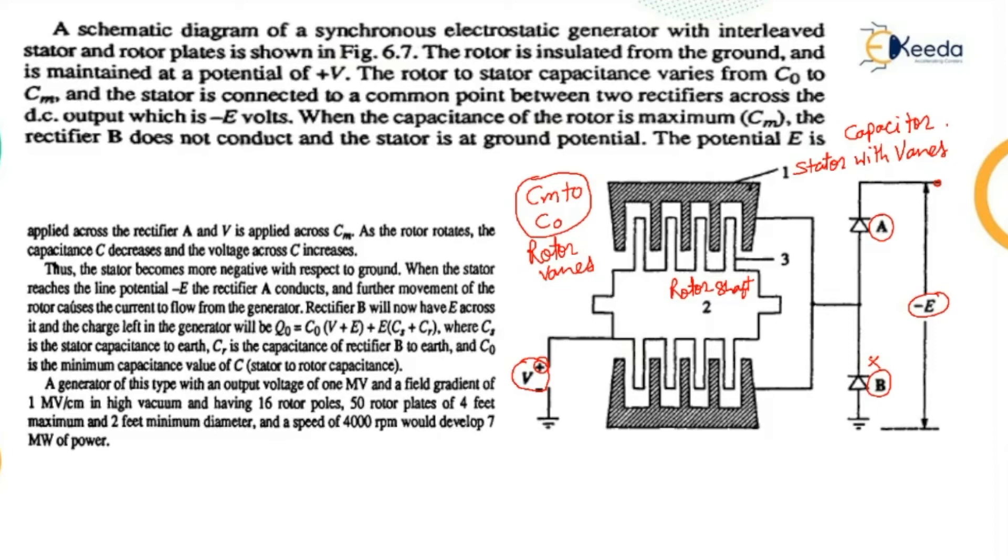Thus the stator becomes more negative with respect to ground. When the stator reaches the line potential minus E, the rectifier A conducts and further movement of the rotor causes current to flow from generator.